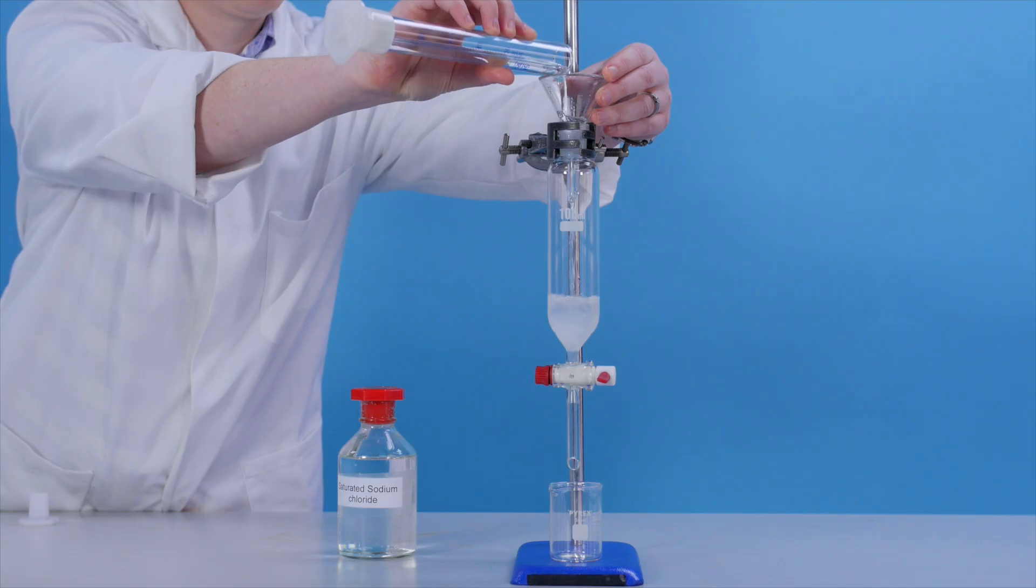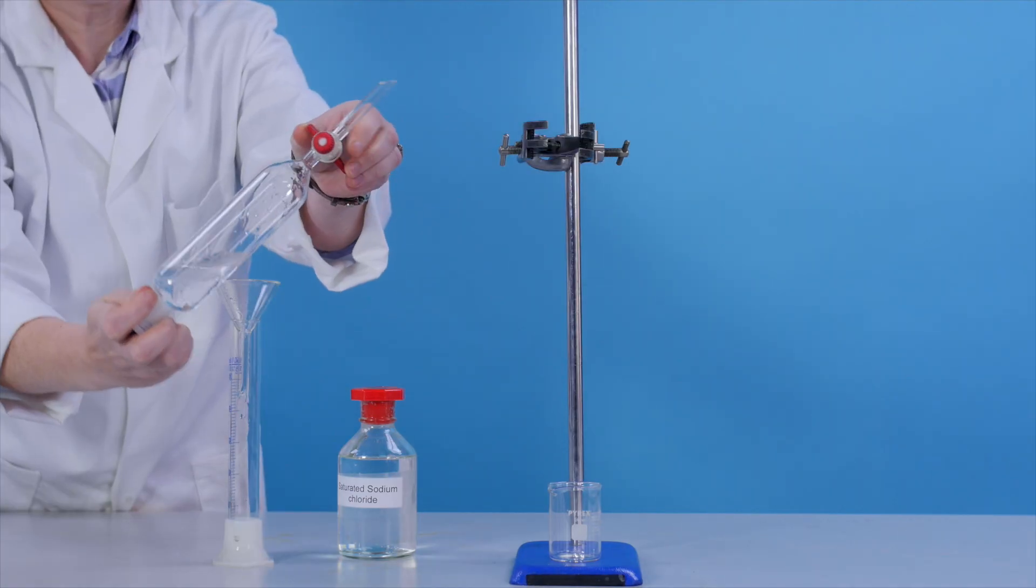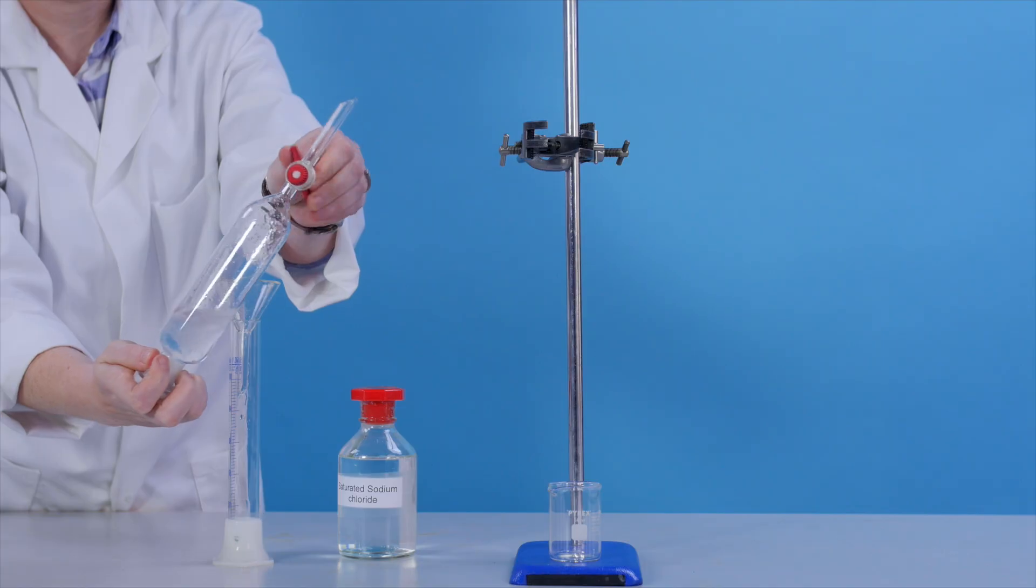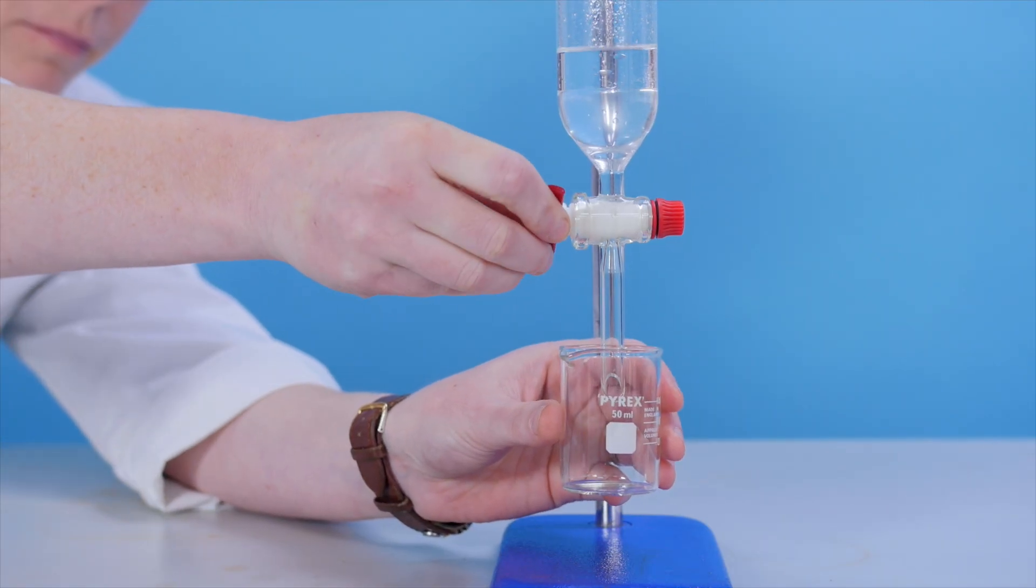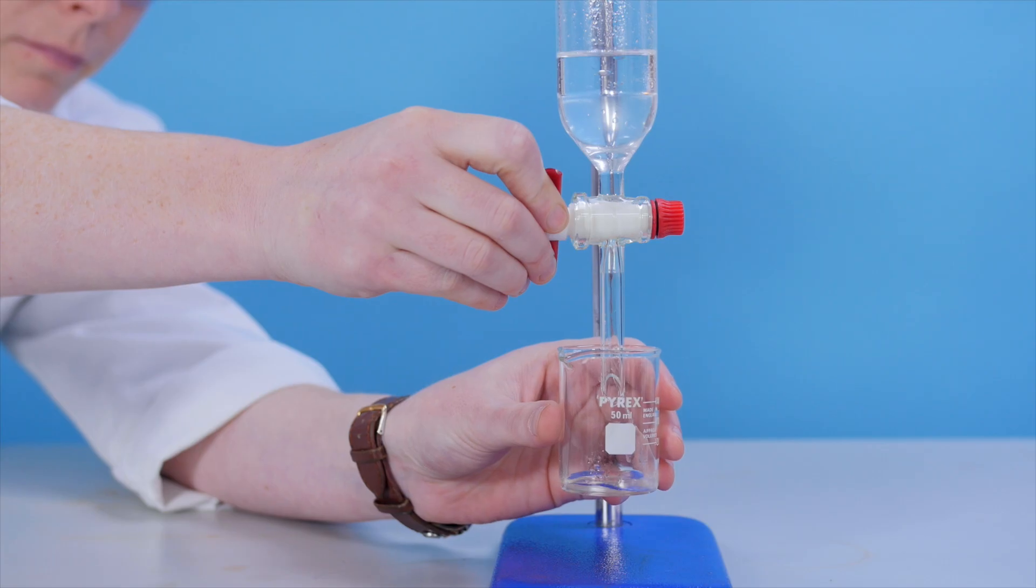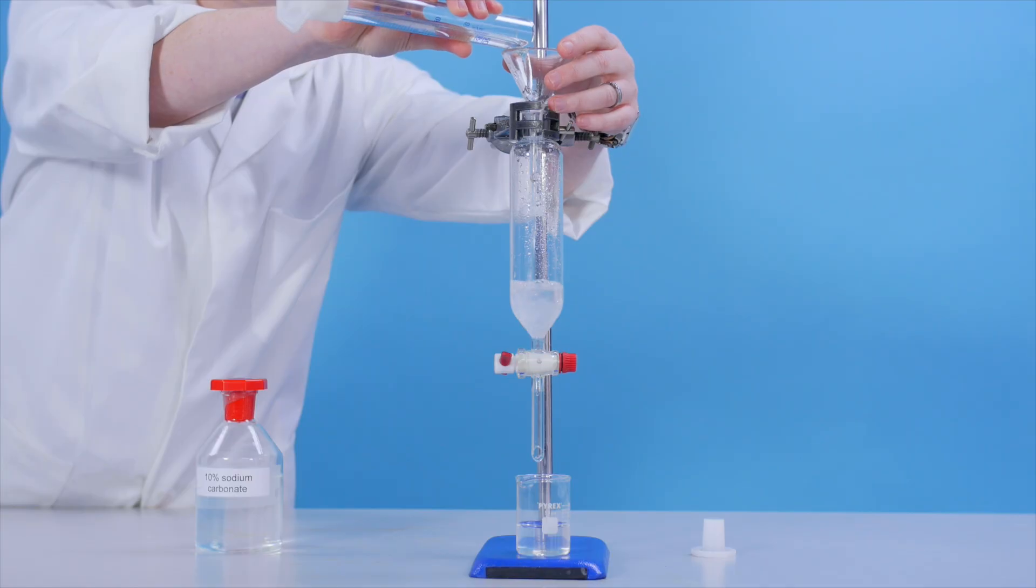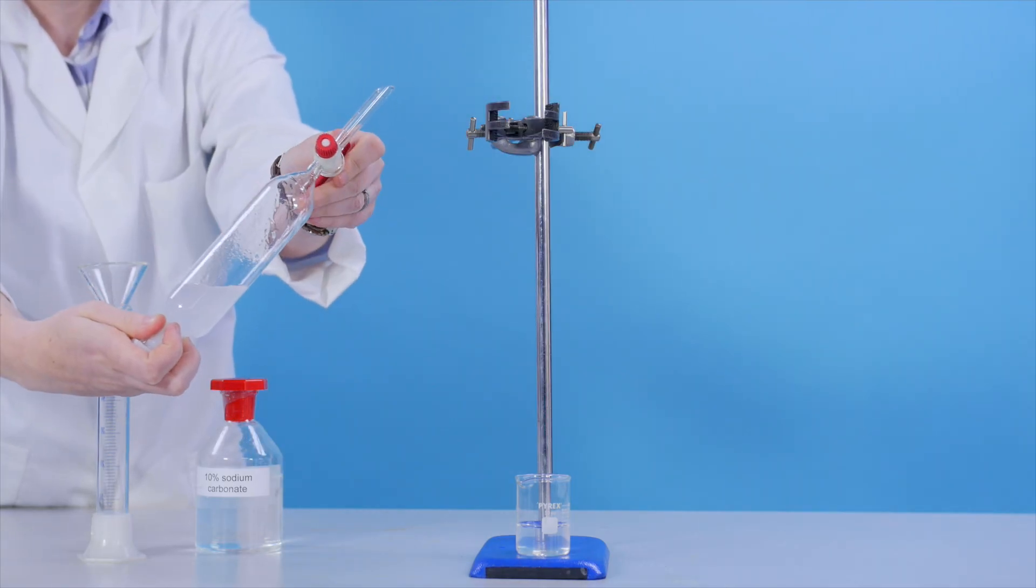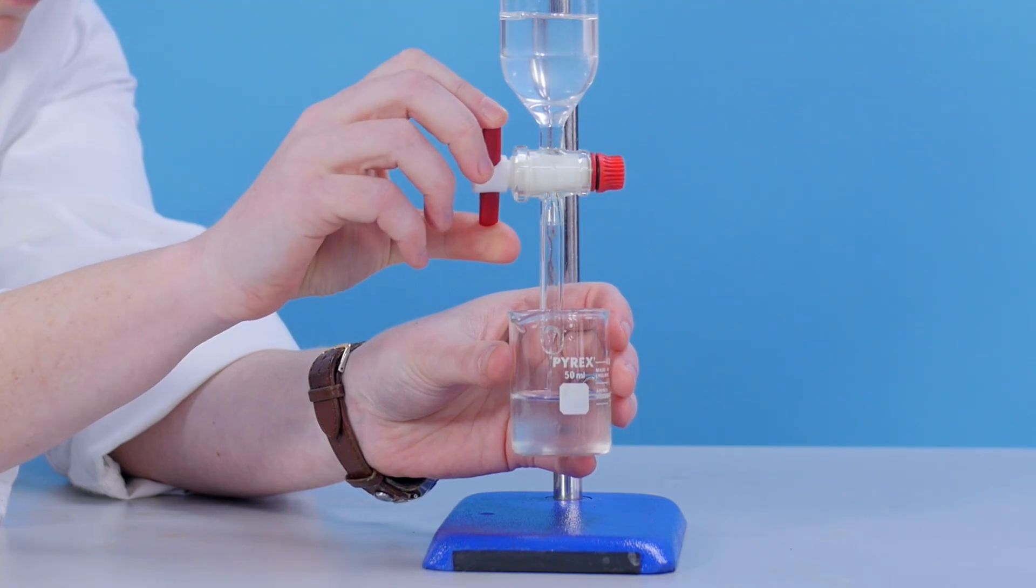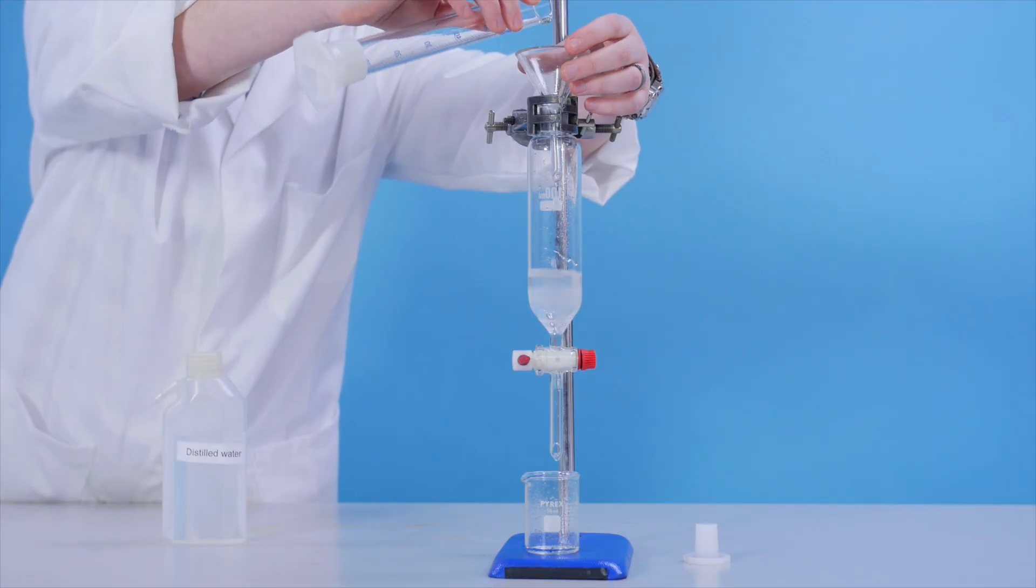Remove impurities by washing the organic layer. First, with a saturated solution of sodium chloride. And then with an aqueous solution of sodium carbonate. Give the product a final wash by shaking with water.